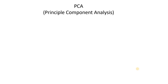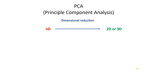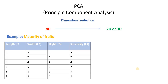Hello everyone, today we will see Principal Component Analysis. It is a very important feature reduction technique, also called dimensionality reduction. Whenever we have more than around 10, 15, or sometimes up to 50 features, we need to reduce the dimension to 2 or 3. For that purpose we do Principal Component Analysis.